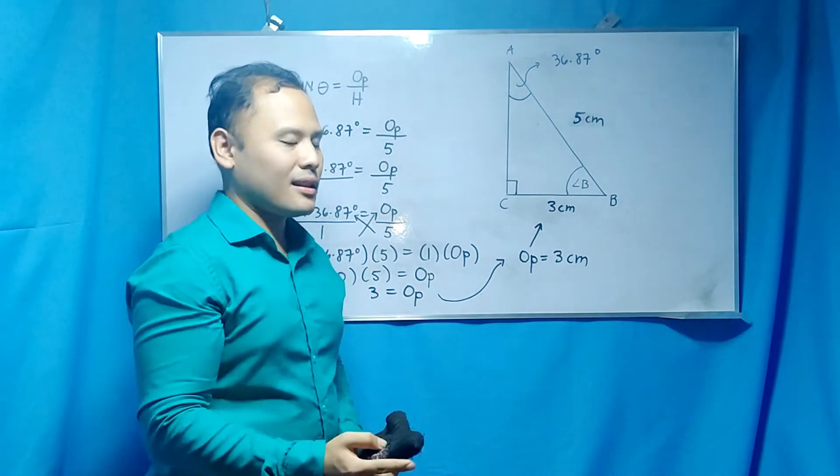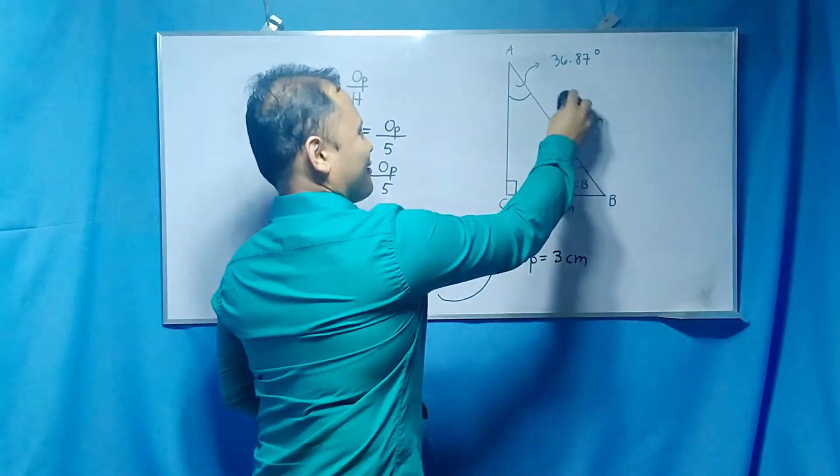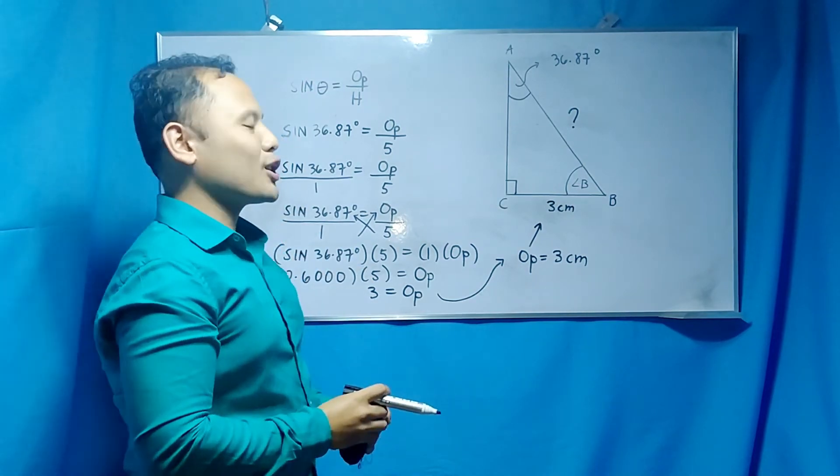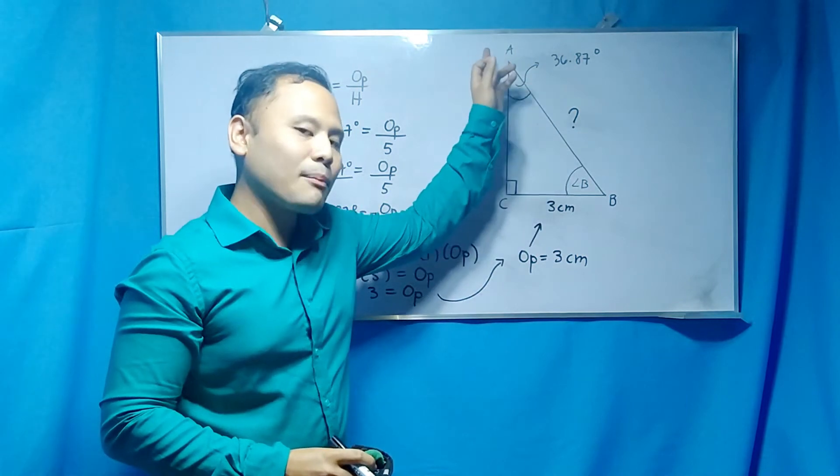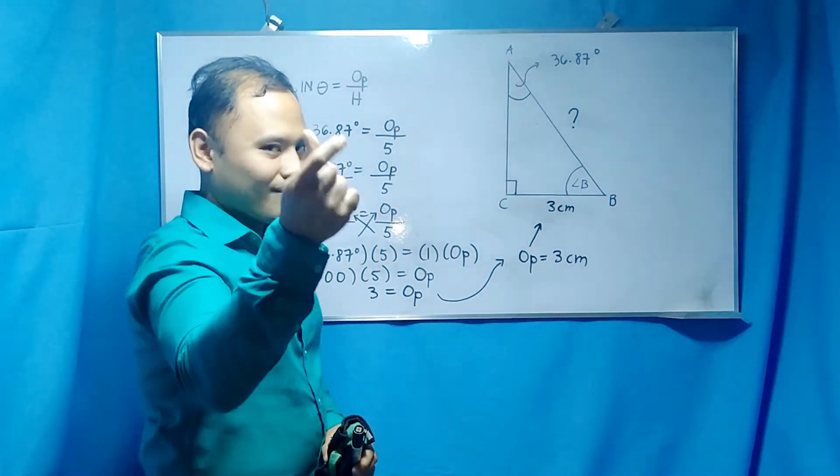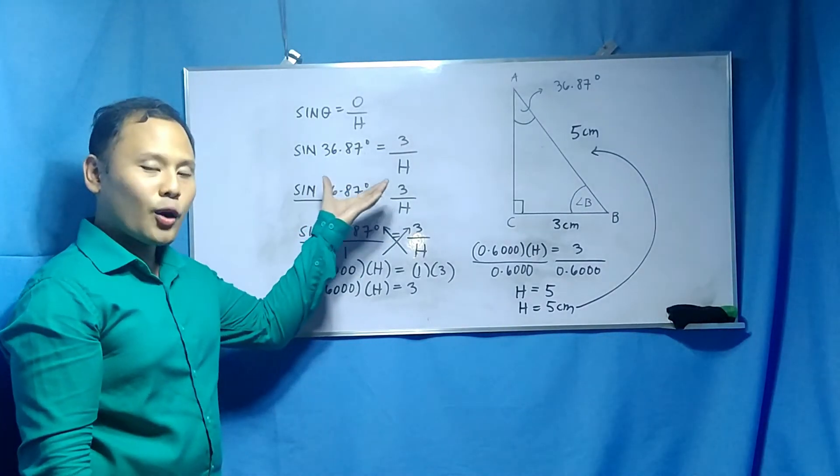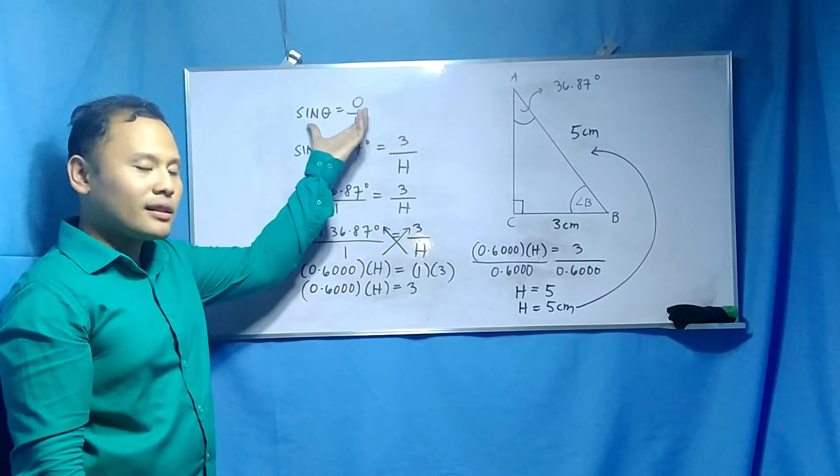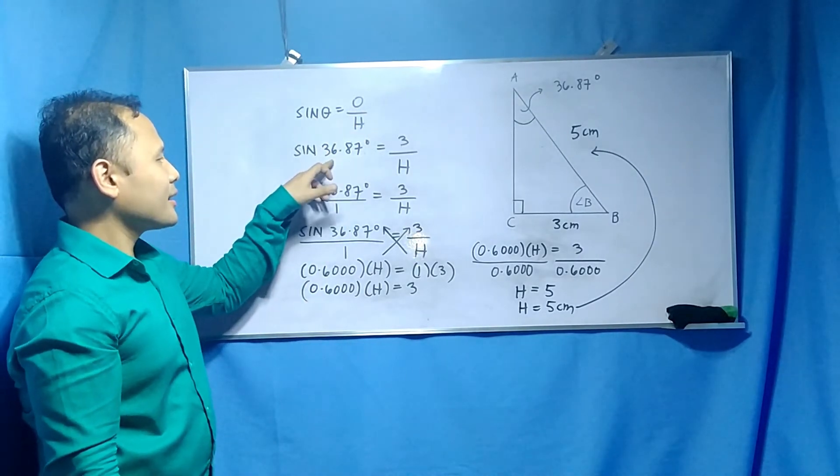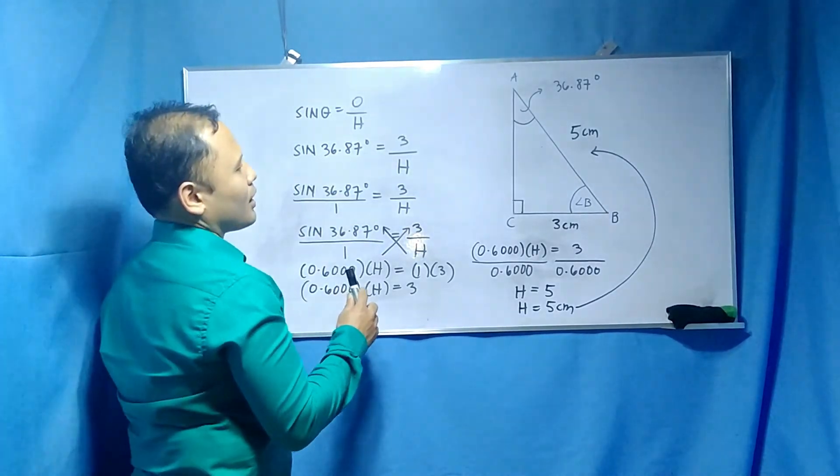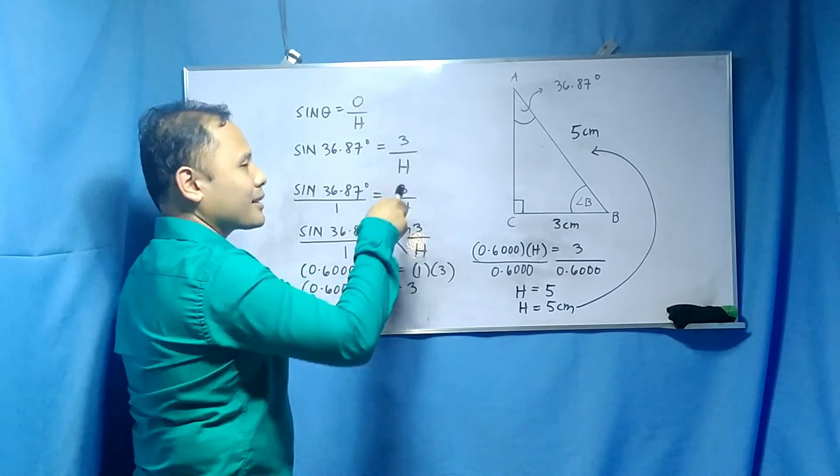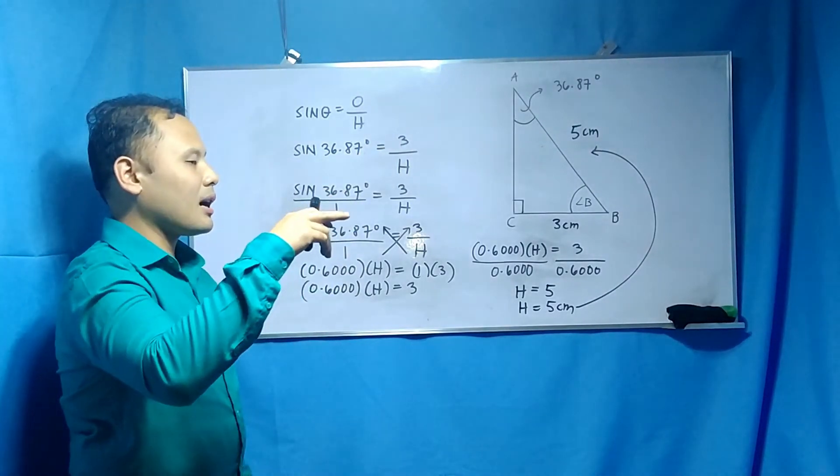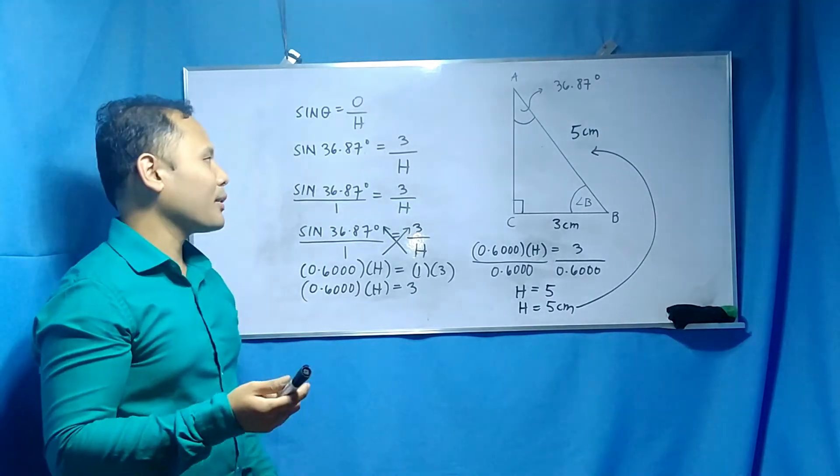And let me manipulate again. How about if this is missing? We are like playing games. But don't worry, I will show you the solution—how to solve for the missing measure of the hypotenuse. Class, this is the solution for obtaining the missing measure of your hypotenuse. So we are using the same sine function. We know that the measure of your acute angle is 36.87 degrees, and the measure of your opposite, according to our right triangle just a while ago, the measure of the opposite is 3 cm. But we can neglect the unit of measurement. We write only the number 3.